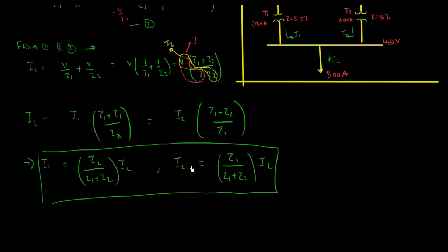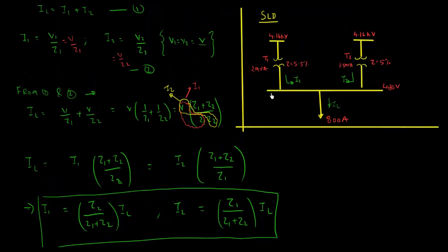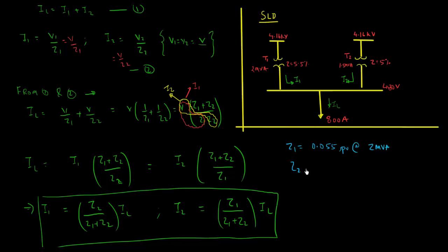The reason we can't substitute directly is that Z1 and Z2 are on different bases. In per-unit analysis, all impedances must be on the same base. We have Z1 = 0.055 per unit at 2 MVA, and Z2 = 0.050 per unit at 1.5 MVA. We need to convert one to match the other's base.